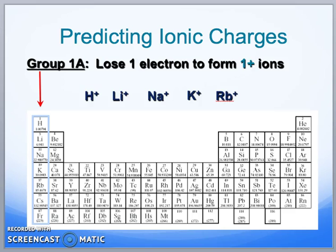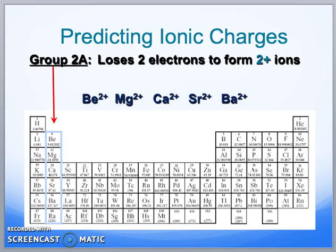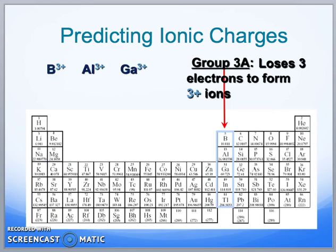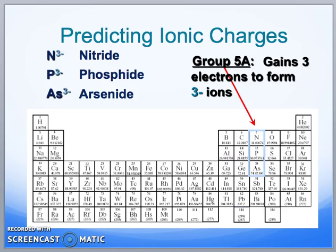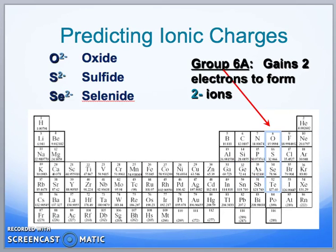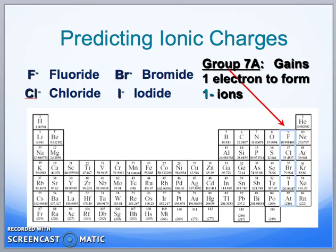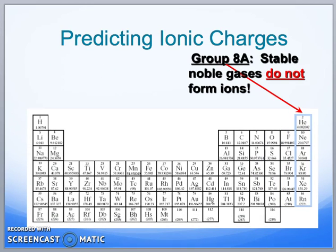When we're talking about the groups on the periodic table, Group 1A has lost an electron, so it has a charge of positive 1. Group 2A has a positive 2 charge. Group 3A has a positive 3 charge. Group 4A has a positive 4 charge, but many times group 4 ions tend to share their electrons. Group 5A has negative 3, Group 6A is negative 2, Group 7A is negative 1.